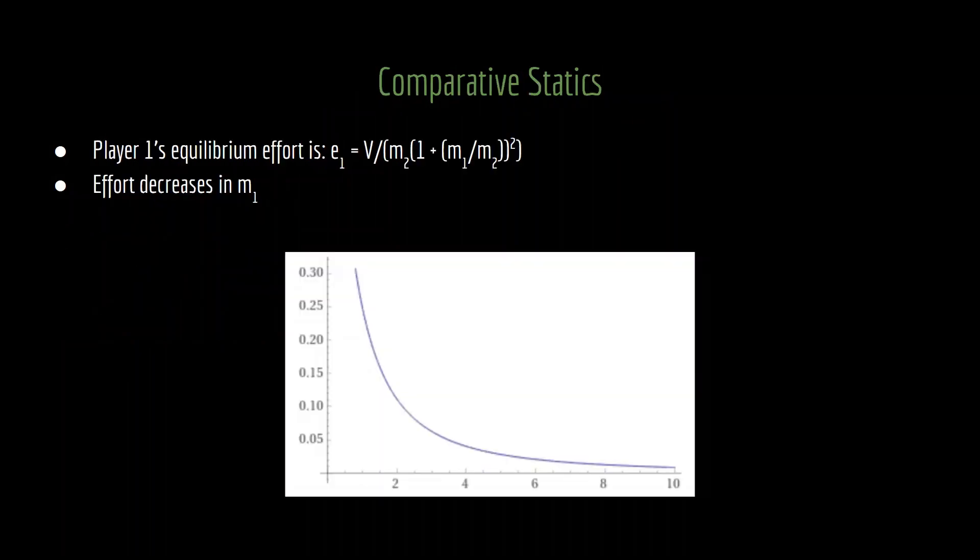Let's conclude with a couple of noteworthy comparative statics. First, let's think about how player one's effort changes as a function of its own marginal cost. Intuitively, as its marginal cost increases, it becomes more expensive to exert effort, and intuitively, you would expect player one's effort to go down. And indeed, that is what happens in equilibrium, as we see here. If you were to take the derivative of that top line with respect to M1, you would get a negative value, which is what the figure below is illustrating. As you increase M1, you are decreasing the amount of effort that player one is exerting in equilibrium.